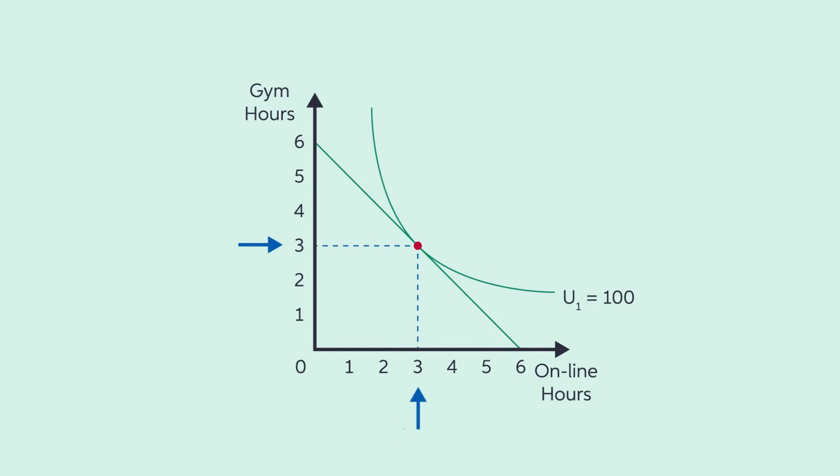What if he were to consume more online time and less gym time? The affordable marginal rate of substitution along his budget constraint lets him substitute 1 additional hour of online time for 1 less hour at the gym. This tradeoff occurs at a slope value of minus 1.